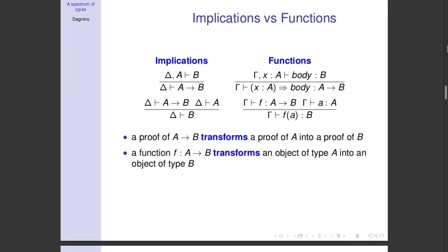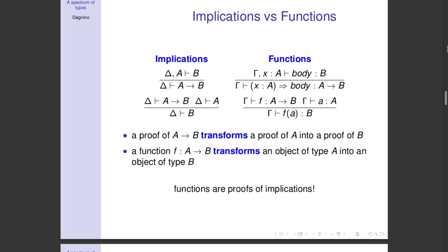The rules on the left are the rules for dealing with implications, and the rules on the right are those for typing functions. So there is a deep connection between functions and implications. A proof of an implication is a transformation of a proof of A into a proof of B, and a function is a transformation of objects of type A into objects of type B. This suggests that functions can be seen as proofs of implications, and function types are implications. This is the first connection between types and logic.